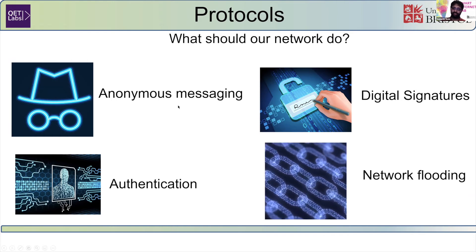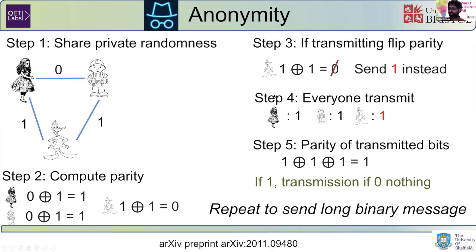Let's first go to anonymous messaging. Anonymous messaging is something that could be solved long ago — it's essentially the cryptographer's dining problem. If everybody shares private randomness, then all you have to do is compute the parity and the one transmitter just flips the parity. If the parity of all the transmitted bits is one, there is a transmission; if zero, there's nothing. You can repeat this to send a long binary message. This is an old solution, but cannot be implemented because of the difficulty of sharing private randomness — at least until now.